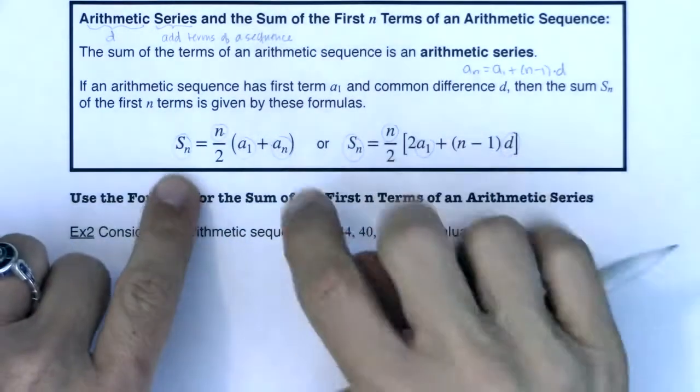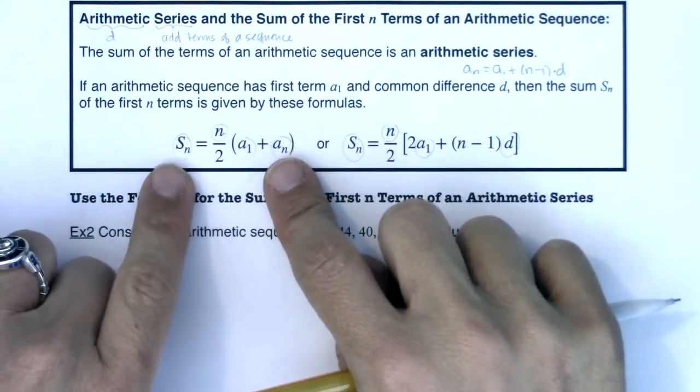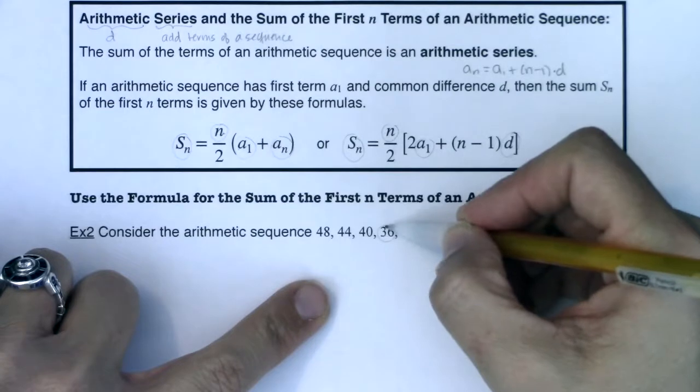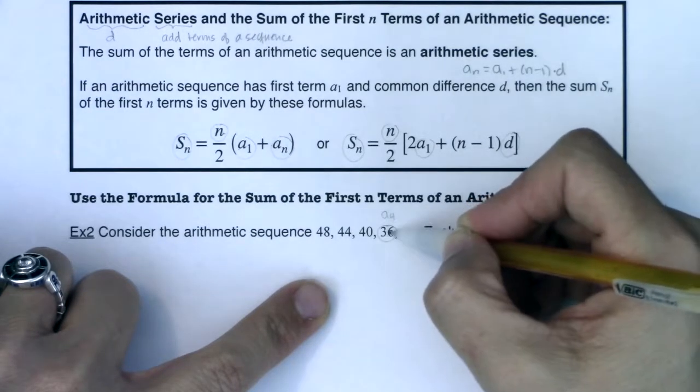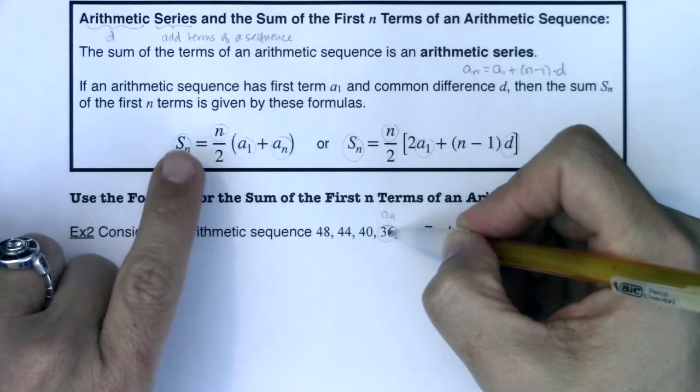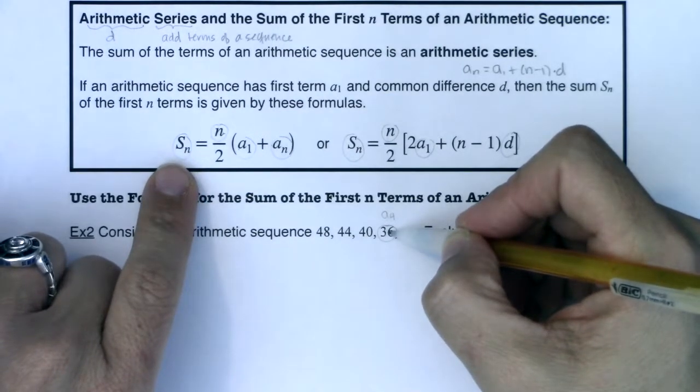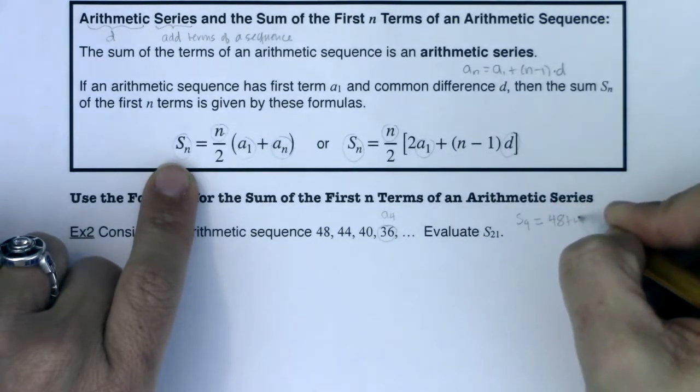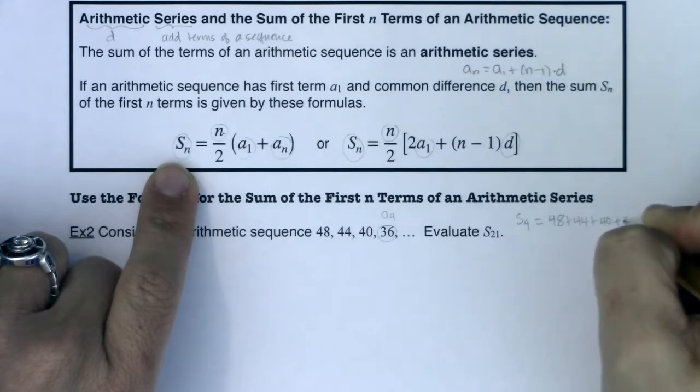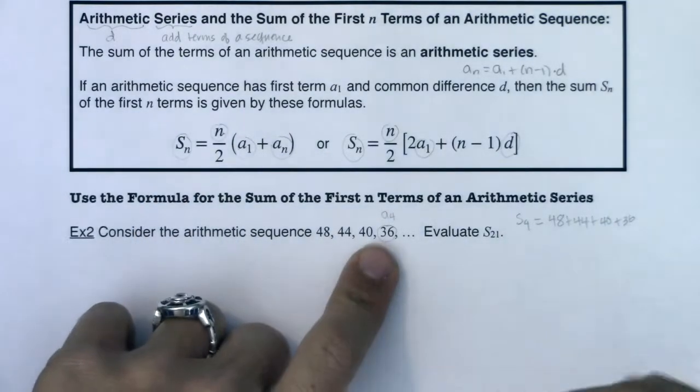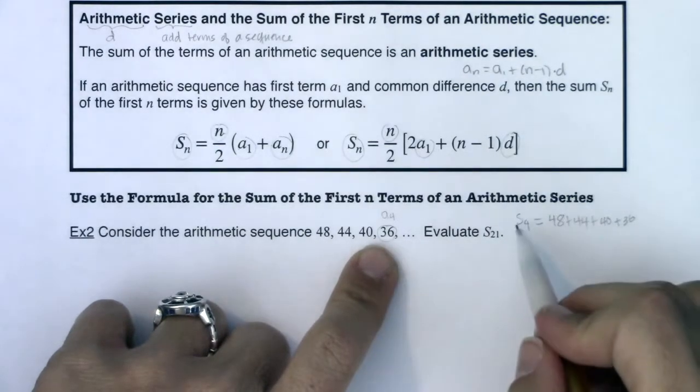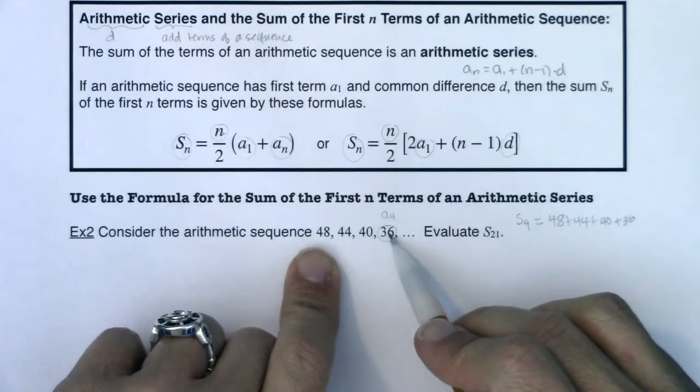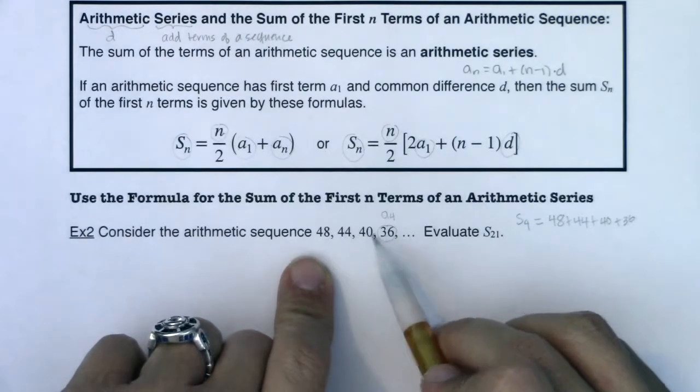But I really want to specify the difference between a_n versus s_n. a_n is just a term in your sequence. It's the nth term. So right here, if I was talking about this, this is just a₄. a₄ is 36. s_n is the sum of the first n terms in your sequence. So if I was talking about s₄ over here, that would be 48 plus 44 plus 40 plus 36. So again, I want you to take note of the difference. a₄ is just the number. s₄ is adding the terms of the sequence.